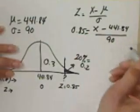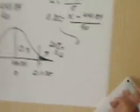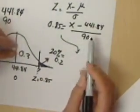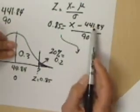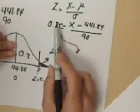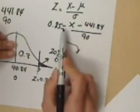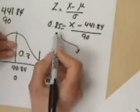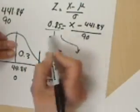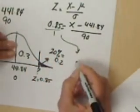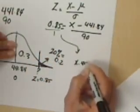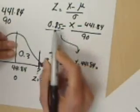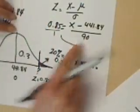Solving for x now, I'll show you how to do this here. Cross multiply so that this numerator multiplied by this denominator, which is 1, is itself. So we get x minus 441.84 equals this numerator times this denominator.